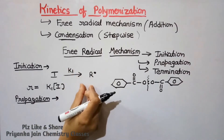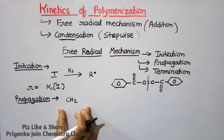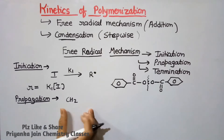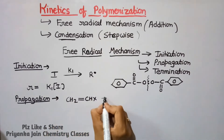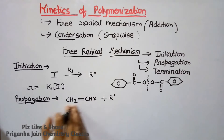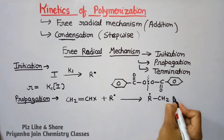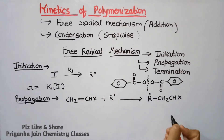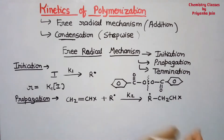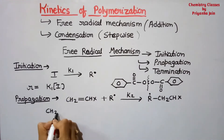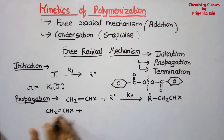The second step is propagation. The radical formed in initiation attacks a monomer unit. A common example is polyvinyl chloride formation, where the monomer is vinyl chloride. The radical attacks the monomer unit, generating another radical with rate constant K2. This new radical can attack more and more monomer units, and the chain propagates.